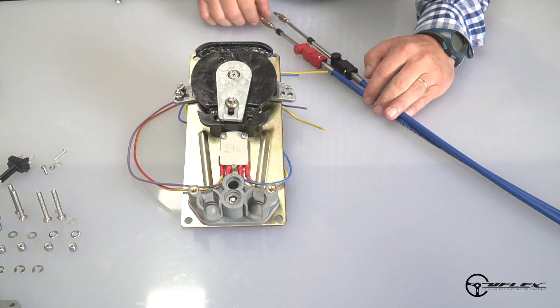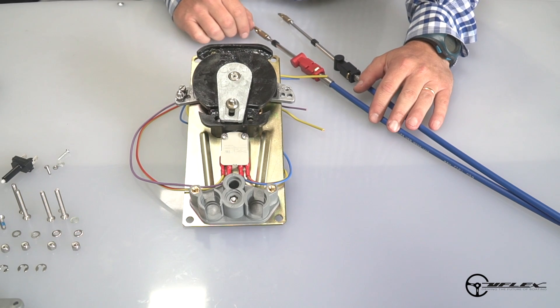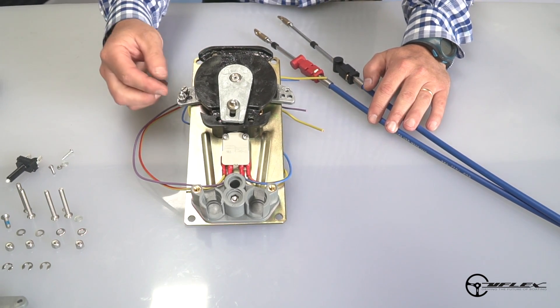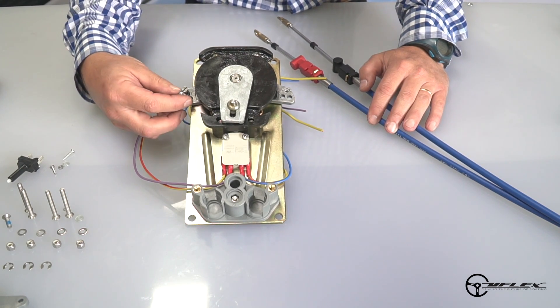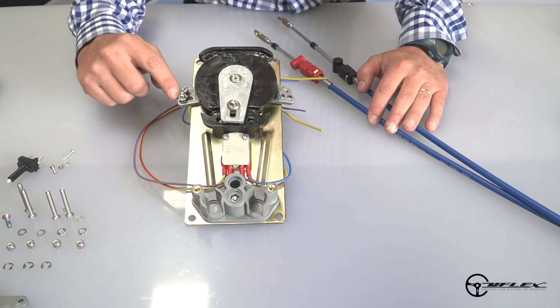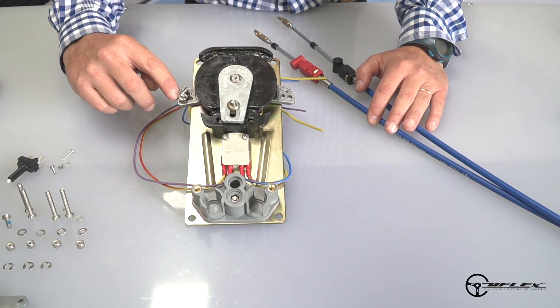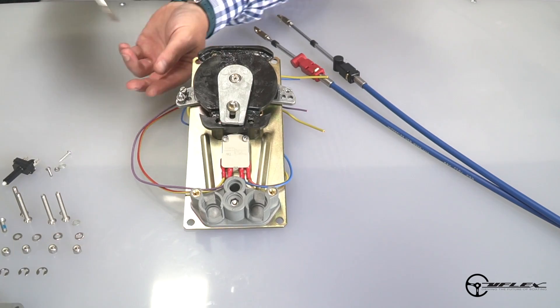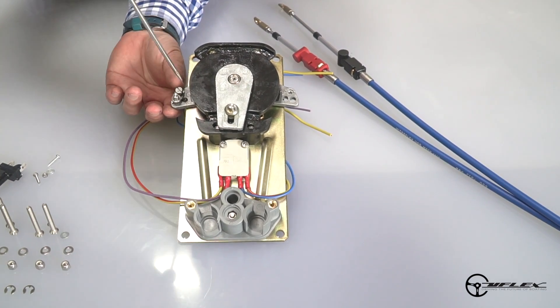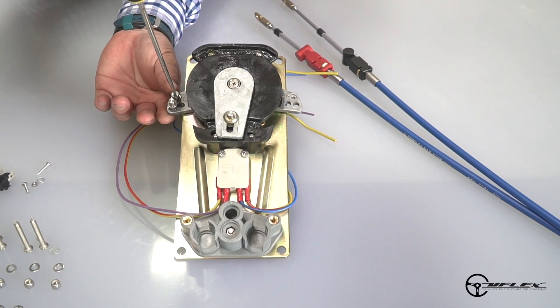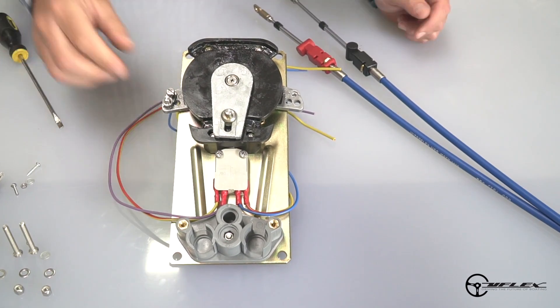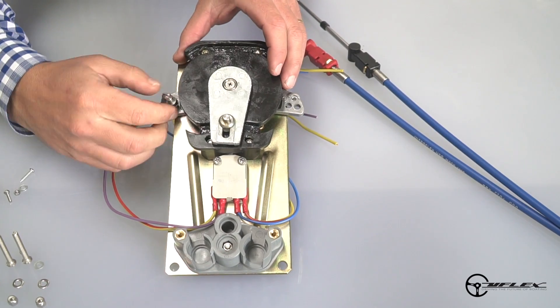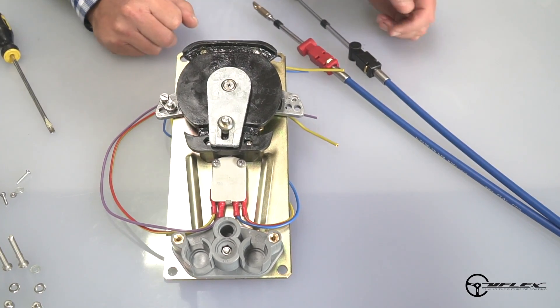We are now installing the cables on the control. The first thing we have to define is on the shift side which kind of stroke we have. In this position, we have 3.07 inches of stroke. And if we move the connector to the inner position here, we're going to have 2.64 inches of stroke. So we have these two options.